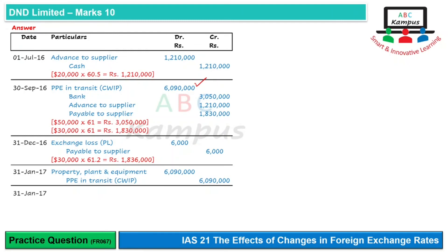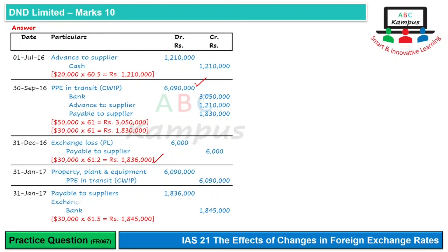January 31, 2017 ko jo entry hogi, humne payment ki hai - $30,000 ki payment, rate 61.5 hai, to hume Pakistani rupees mein Rs. 18,45,000 pay karne pade. Itne se toh hamaara bank credit hoga. Hamaari jo liability recorded hai, wo last time Rs. 18,36,000 par recorded hai - Rs. 18,30,000 ki original record ki thi aur Rs. 6,000 ki baad mein year end par. To payable jo hamaara khatam hoga wo Rs. 18,36,000 se hoga. Yahan par hamaare paas difference arise ho raha hai Rs. 9,000 ka - Rs. 9,000 se hume zyada payment karni pad rahi hai, that would be our exchange loss, jo hum profit or loss mein record karenge as a balancing figure.